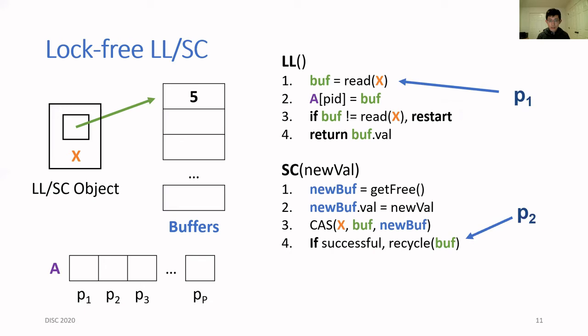A common way to fix this problem is by having process P1 re-read X after announcing. If the current value of X is different from what it announced, then process P1 restarts from the beginning and this fixes the problem. However, now the algorithm is just lock-free instead of constant time because there's no bound on how many times a process might have to restart during the LL.